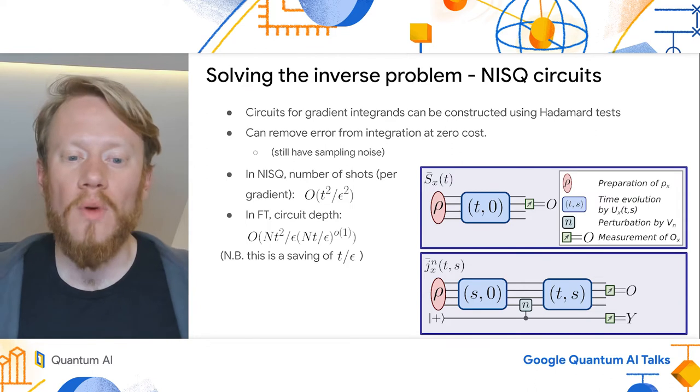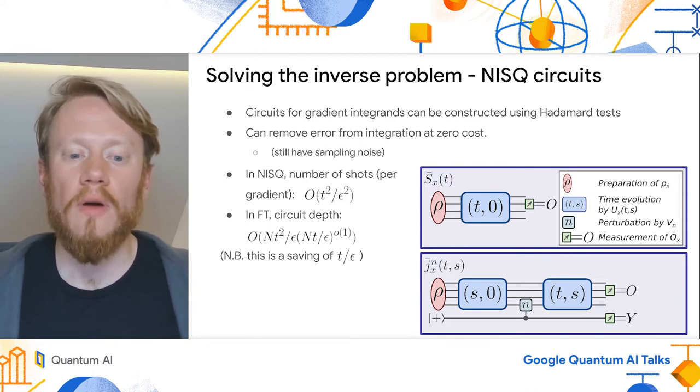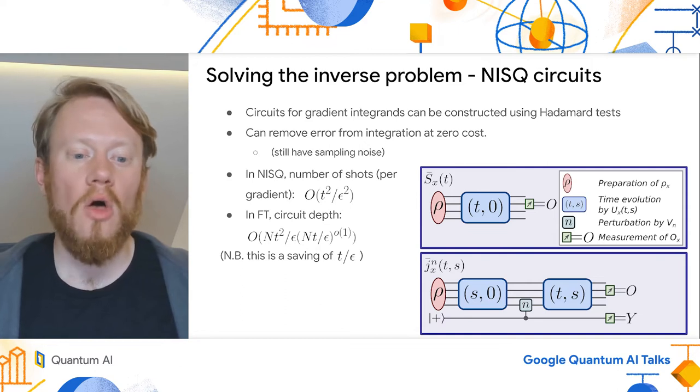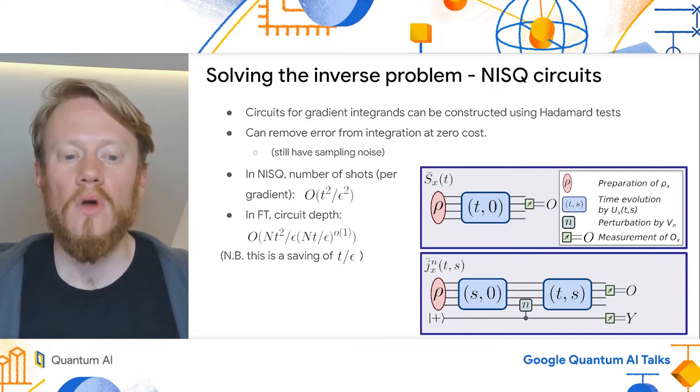The number of shots per gradient scales as t squared over epsilon squared in NISQ, which should be a lower bound given that the gradient itself can scale as order of t.